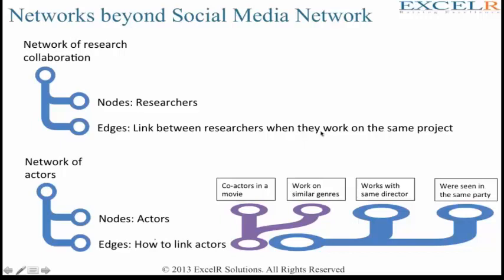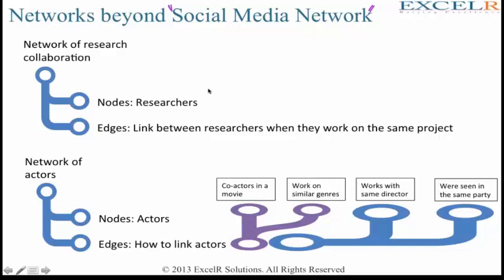Your networks or your nodes need not be restricted to only celebrities. Each node is a celebrity, basically. Rather than restricting ourselves to only the social media network, we can resort to a different network. First of all, we need to understand what is the business problem, and if we can name the node and edge properly, the job is done. Majority of the time has to be spent in understanding the business problem and defining what should be the node and what should be the edge.